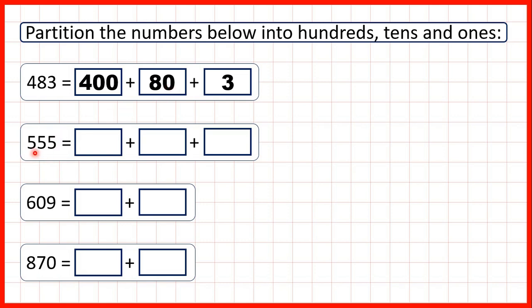So now let's look at 555. This first 5 is in our hundreds place value, so it represents 500. Then we have 5 in our tens, so that's 50, and then 5 in our ones just stands for 5. So if we add 500 plus 50 plus 5, we get 555.